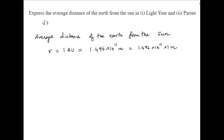Using a similar procedure, we are going to convert the average distance of the Earth from the Sun into the unit called the parsec.